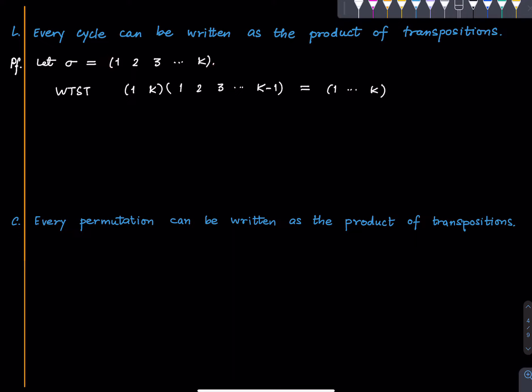This shows that every cycle can be written as the product of transpositions. We proved it for a specific cycle, but really the argument will be exactly the same, or you can use the conjugation property — the first star-marked problem. This has a simple corollary: every permutation can be written as the product of transpositions. Why? Because every permutation can be written as the product of cycles, and now every cycle can be written as the product of transpositions.